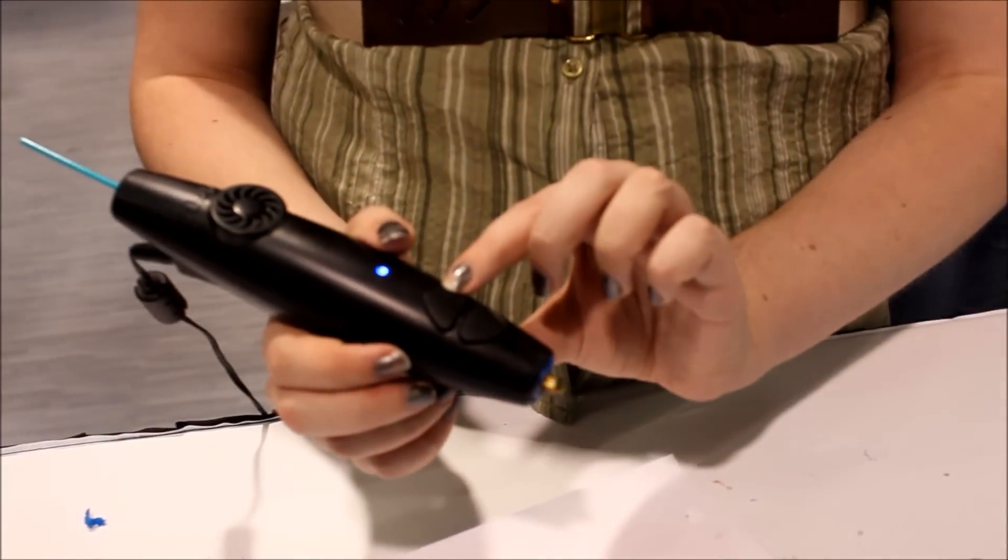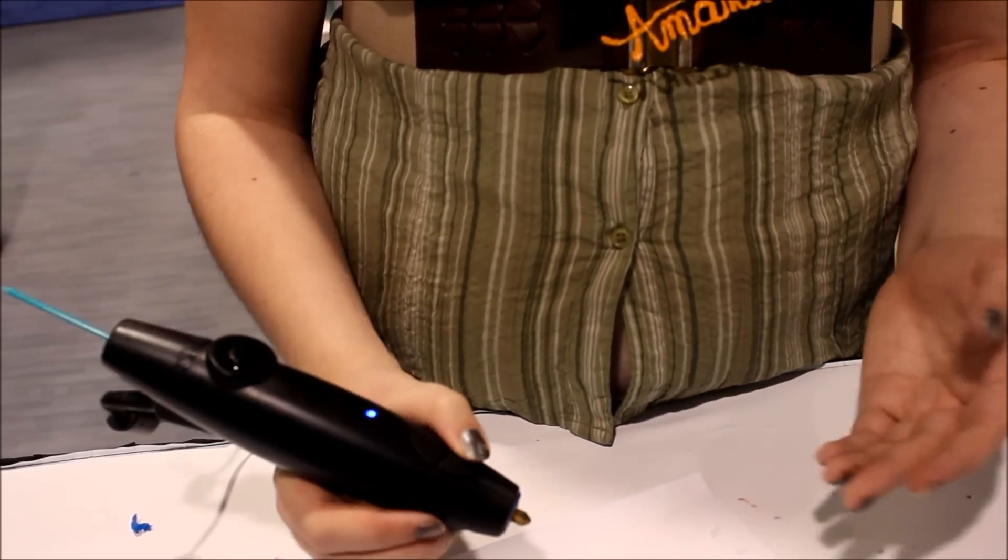You've also got a fast button and a slow button on the pen, fast and slow. And so when you're using the pen on fast, obviously things go a little bit faster, and when you're going slow, you can do the verticals a lot more easily.